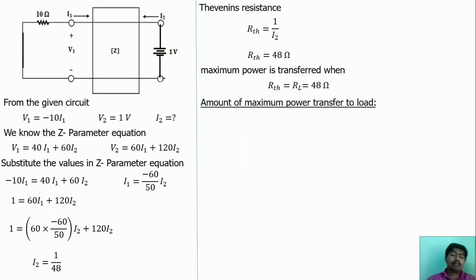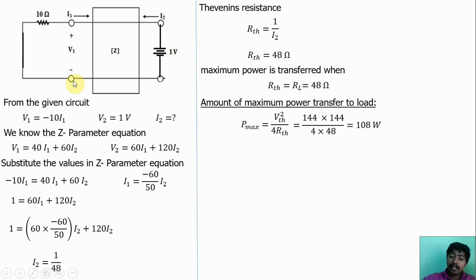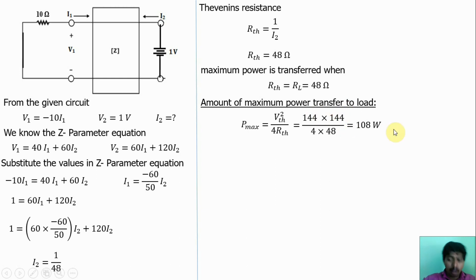The amount of maximum power transferred is given by Pmax = VTH² / (4·RTH). Substituting: Pmax = 144² / (4 × 48) = 20736 / 192 = 108 W. This is the amount of maximum power transferred to the load.